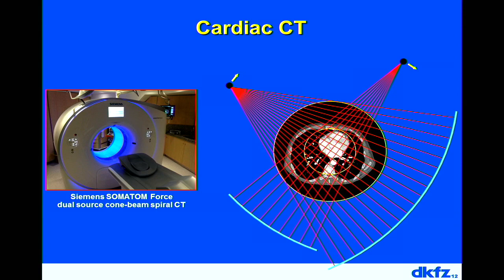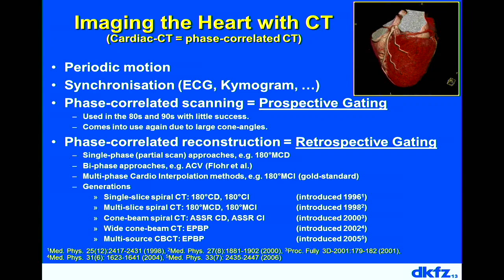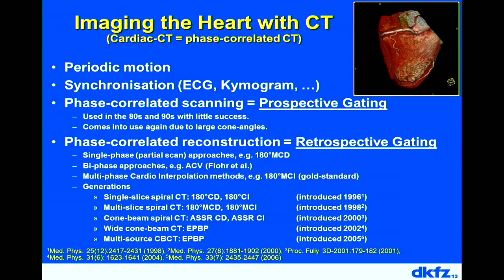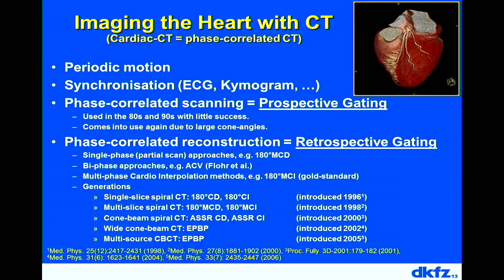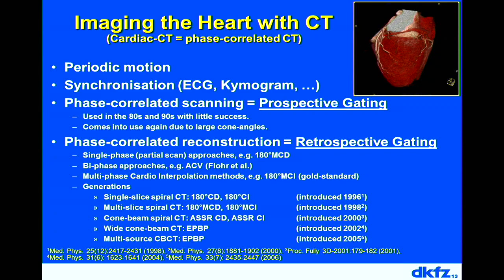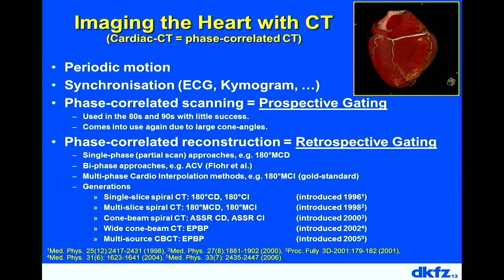To image the heart, one must assume it is quasi-periodically moving, since images from different heart cycles are typically stitched together. We use the ECG signal to know when the patient has systole or diastole. You can either start the scan at a desired moment — called prospective gating — or acquire data freely and decide during reconstruction which cardiac phase to use, for example diastolic data — called retrospective gating. Both techniques are in use today.